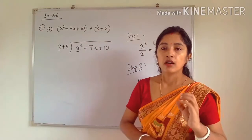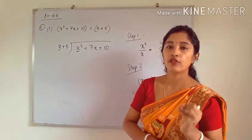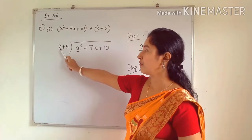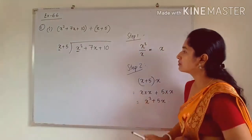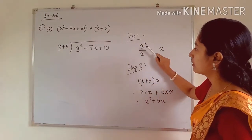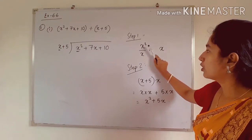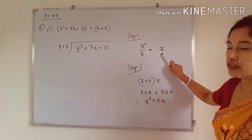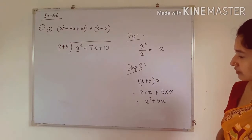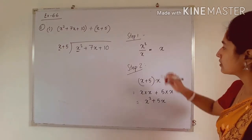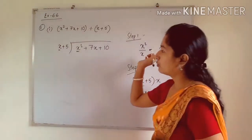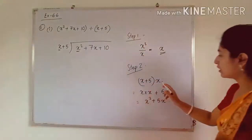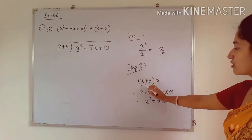First, what we have to do: take the first term of the dividend and divide it by the first term of the divisor. The first term of the dividend is x² and the first term of the divisor is x. Using the law of exponents, x² ÷ x = x. Next, in step 2, we multiply this result by the divisor. So (x + 5) × x, applying the distributive property.